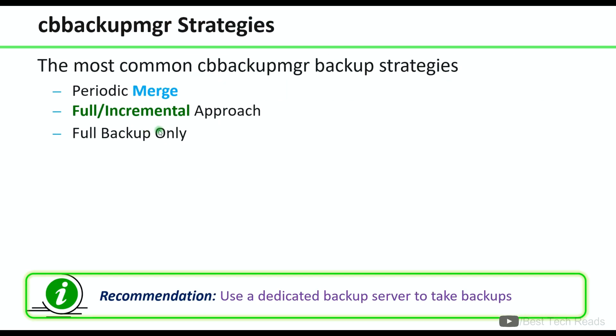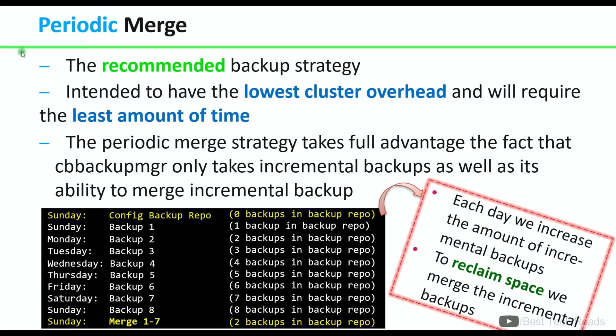These are the most common backup strategies when using cb backup mgr: periodic merge incremental approach and full backup. It is always recommended to use a dedicated backup server to reduce load on the live production cluster during backups. The periodic merge approach is the recommended backup strategy — it is intended to have the lowest cluster overhead and requires the least amount of time. Backup one has one backup, backup two has two backups, and so on.